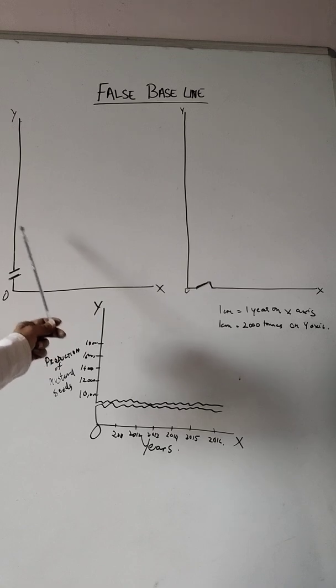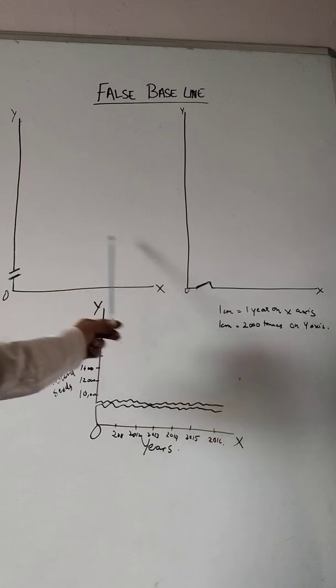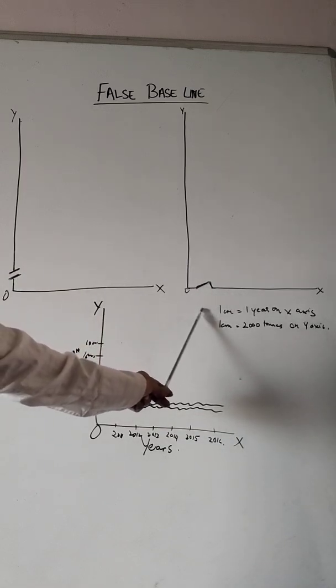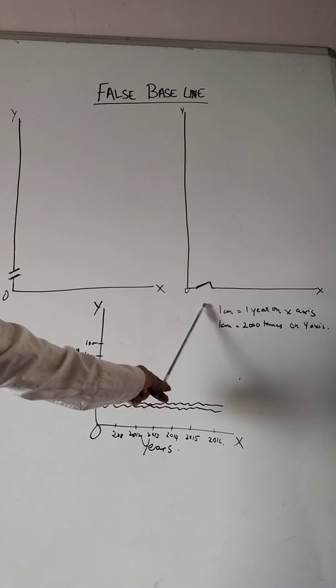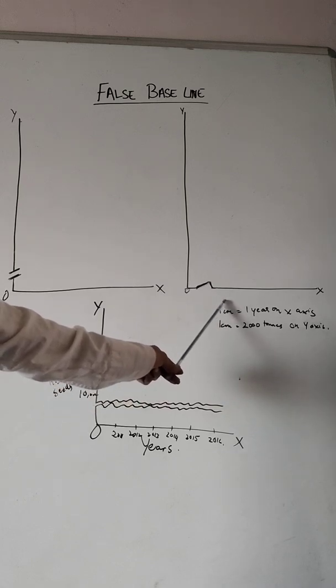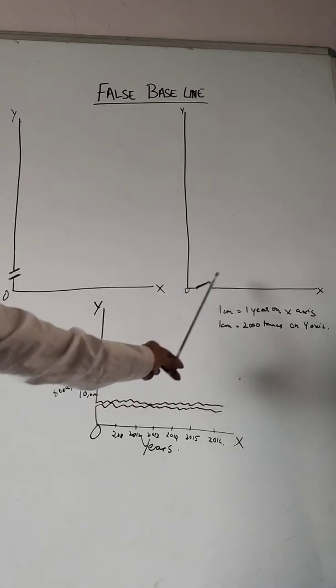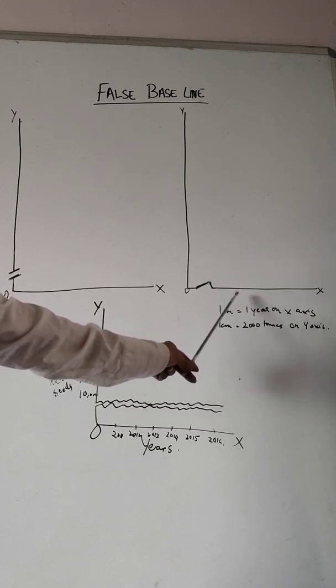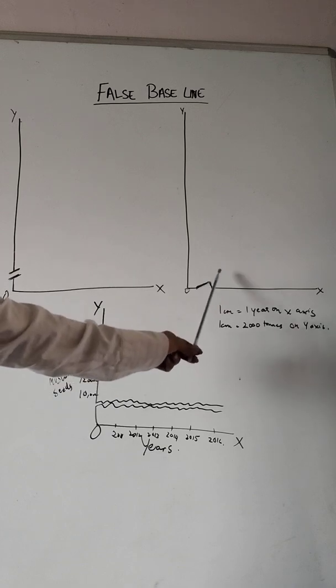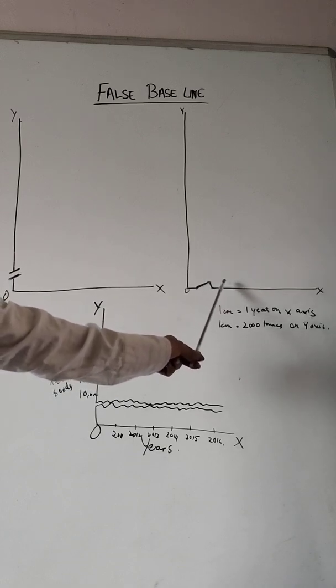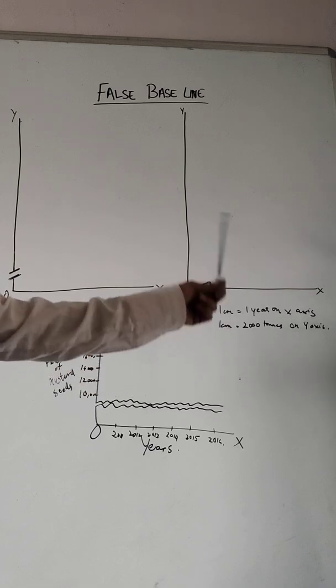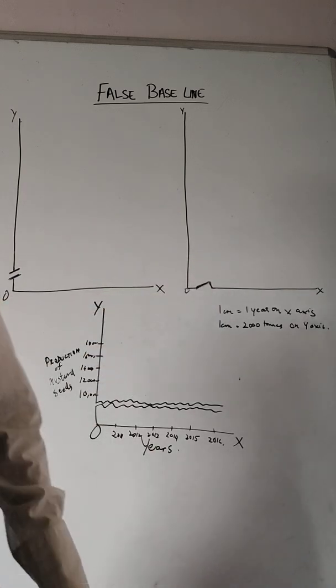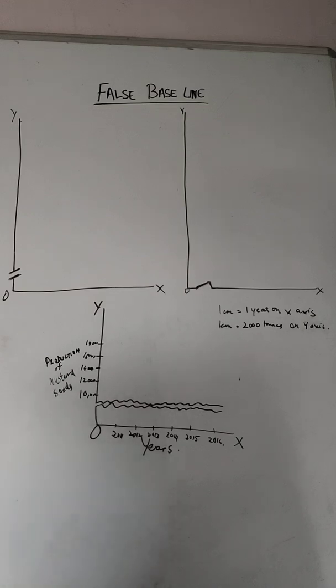So in order to overcome the difficulty, we show it by a cut or a kink on the y-axis like we've seen here. On the other hand, if these values are to be indicated on the x-axis and the difference between the two is huge, then a cut or kink is marked on the x-axis, and then after that one marks the values in the same manner.